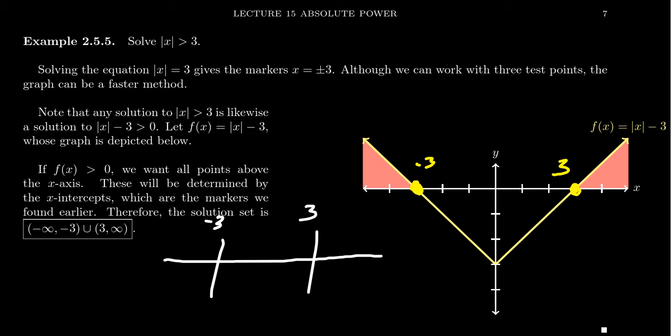We've learned previously how we could do this using a sign chart. We take the x-axis and divide it into three regions by our two markers, negative 3 and 3. The sign chart requires test points, so we pick a number on each interval. Between negative 3 and 3, we use zero. Bigger than 3, we could use 4. And less than negative 3, we could use negative 4.